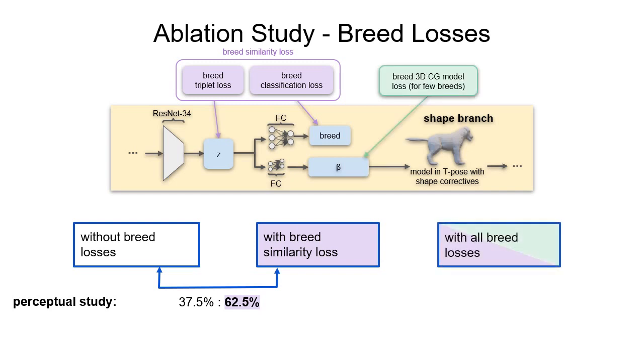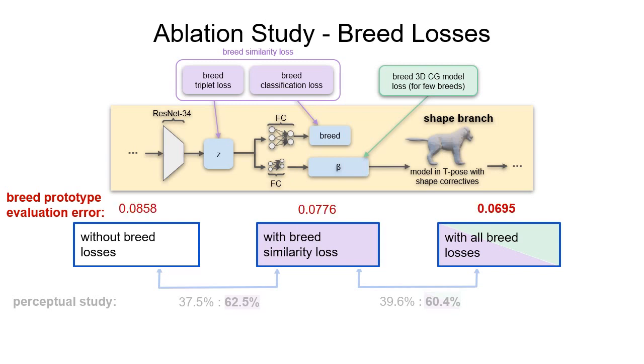In the next step, we add the 3D breed loss and compare to the version with only the breed similarity loss. Again, participants rate the new model as more accurate. A breed prototype consistency evaluation leads to the same result. Bark outperforms the ablated versions.